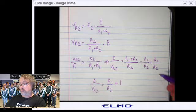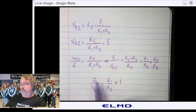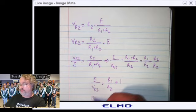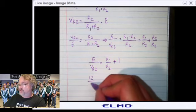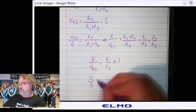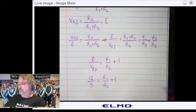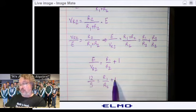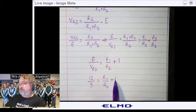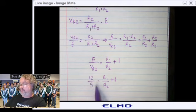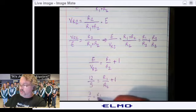At this point, I suggest we use numbers. So what was E? E was 12 volts. What is VR2? That's our target voltage of 5 volts. What is R1? What is R2? I don't know. We're going to subtract 1 from both sides, but this is going to be 5 over 5. This is going to be 12 over 5 minus 5 over 5, which is 7 over 5 equal R1 over R2.